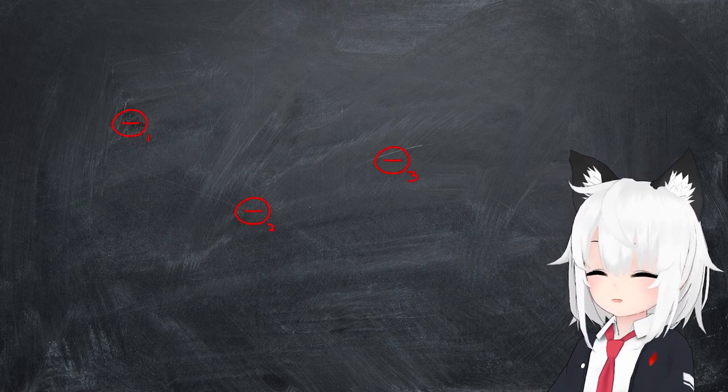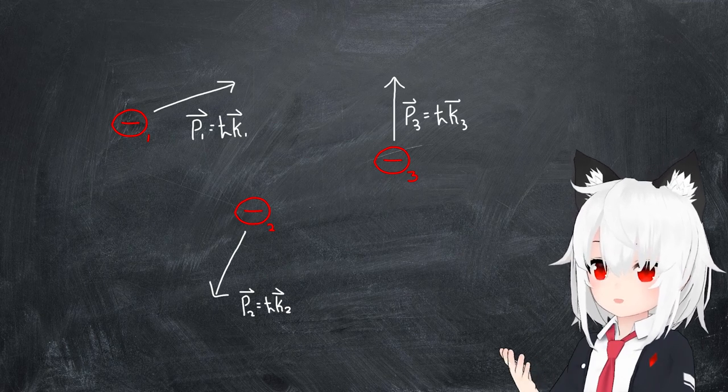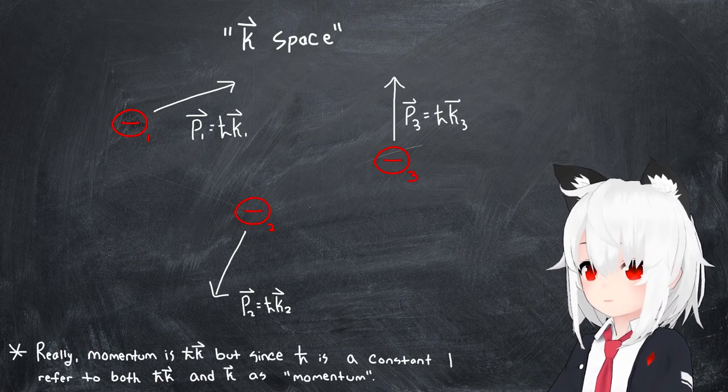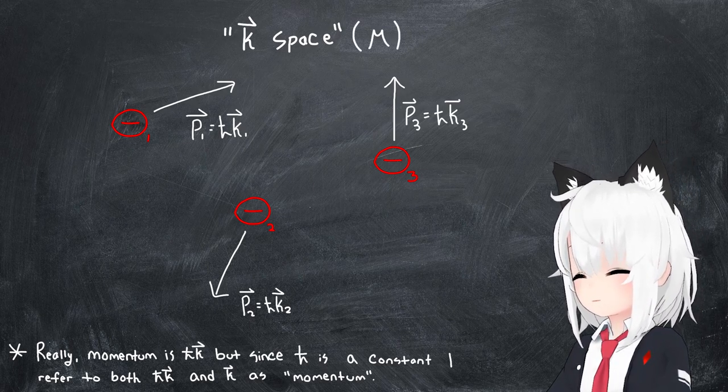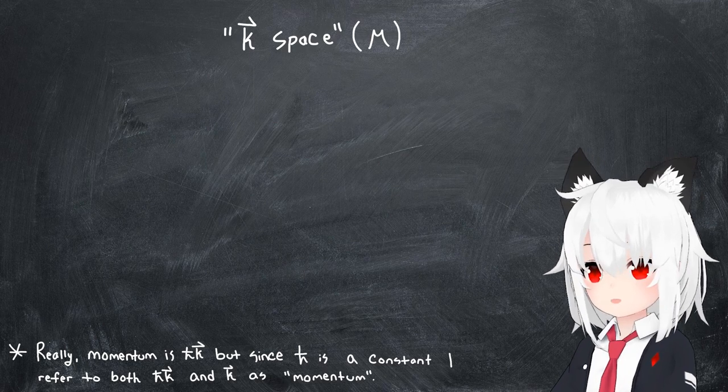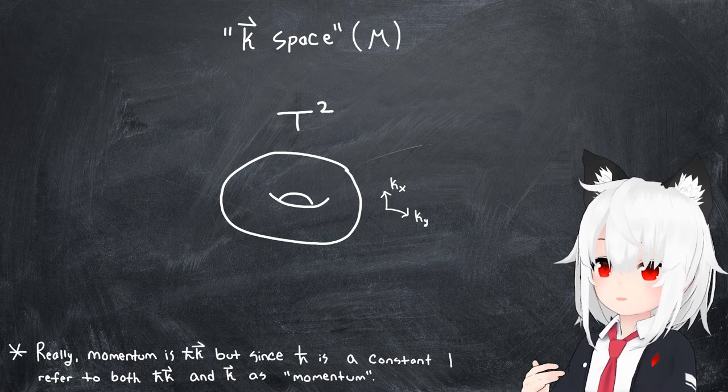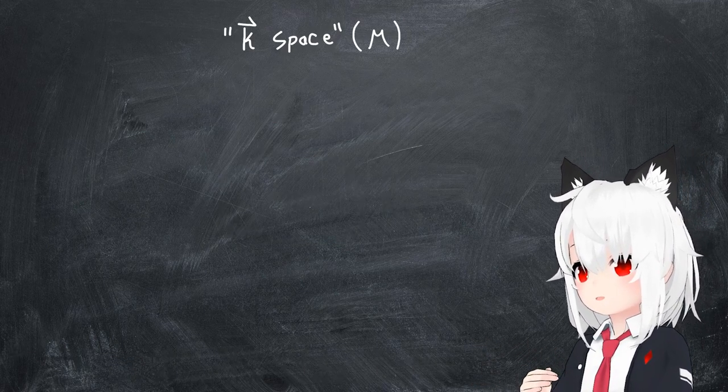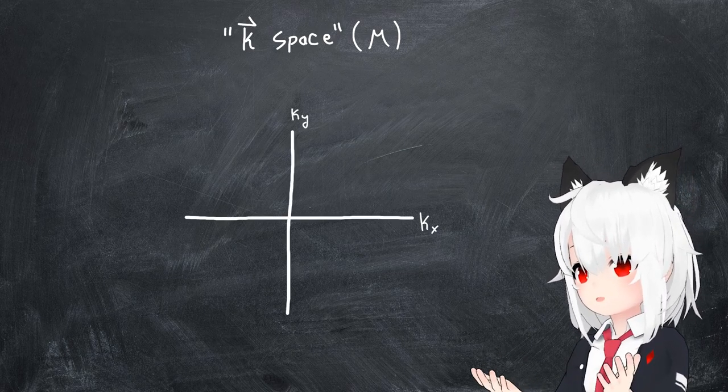When we speak of momentum space, what we really mean is the manifold generated by the set of all allowed momentum values. In two dimensions, this would correspond to a torus, since we'd need to take periodic boundary conditions in both directions to account for the edges. But for the sake of simplicity, we can just think in terms of the two-dimensional Euclidean plane.